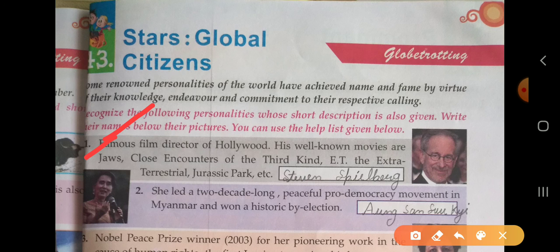First: famous film director of Hollywood. His well-known movies are Jaws, Close Encounters of the Third Kind, E.T. the Extra-Terrestrial, and Jurassic Park. Who is this? This is Steven Spielberg.